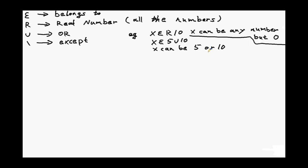In math methods, it's simple to say that real number is all the numbers. Only in math methods — in specialist, you're going to do something with imaginary numbers which are not real numbers. But in methods it's simple: all the numbers are real numbers.